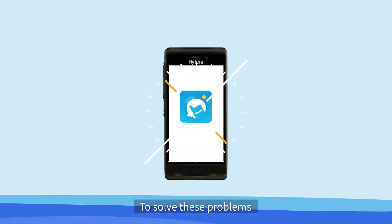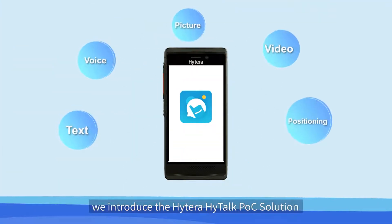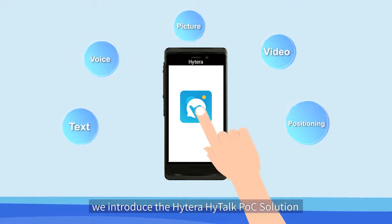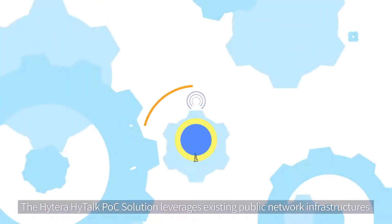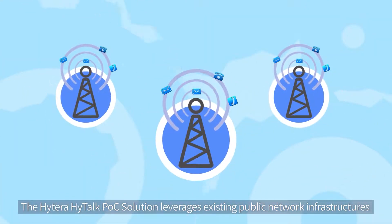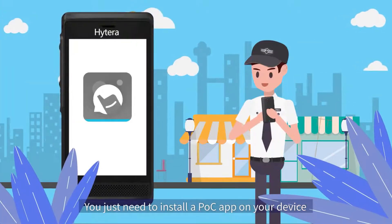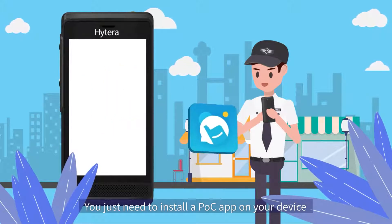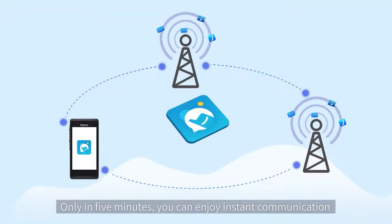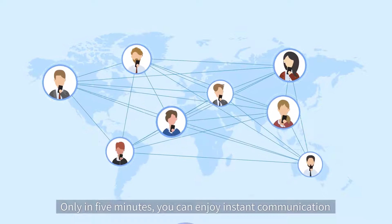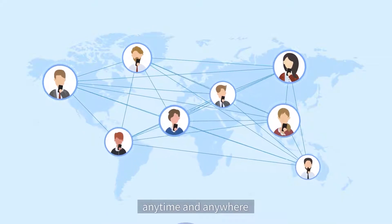To solve these problems, we introduce the Hytera Hytalk POC solution. The Hytera Hytalk POC solution leverages existing public network infrastructures. You just need to install a POC app on your device. Only in 5 minutes, you can enjoy instant communication anytime and anywhere.